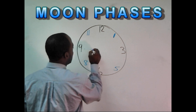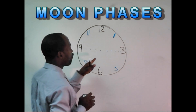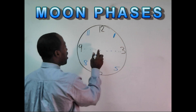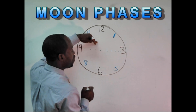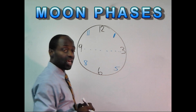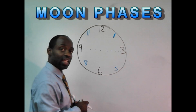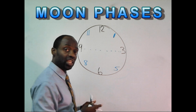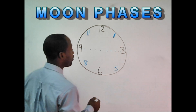I'm going to put a dotted line right through the middle. Anything above this dotted line is going to be referred to as waxing. Anything below this line is going to be waning — and waning means to get darker.